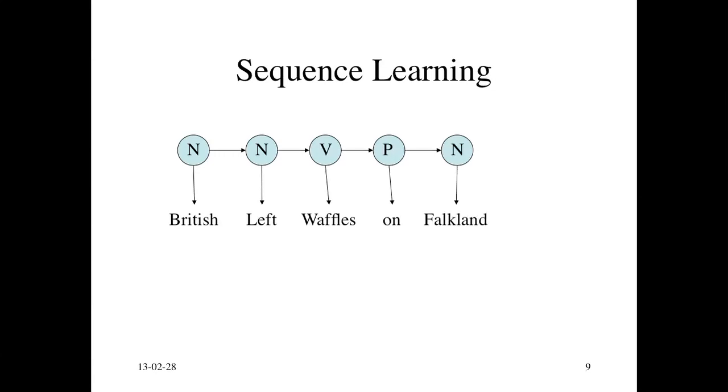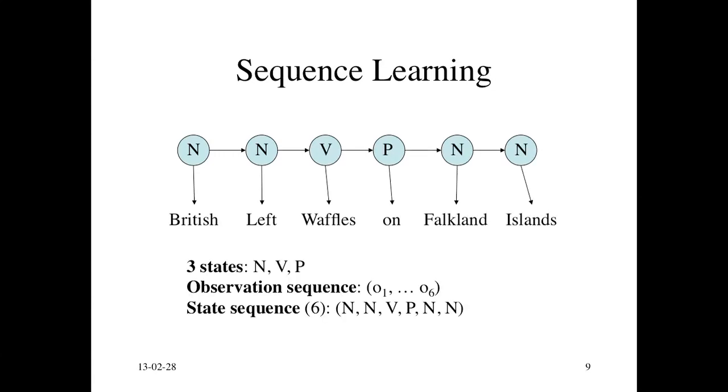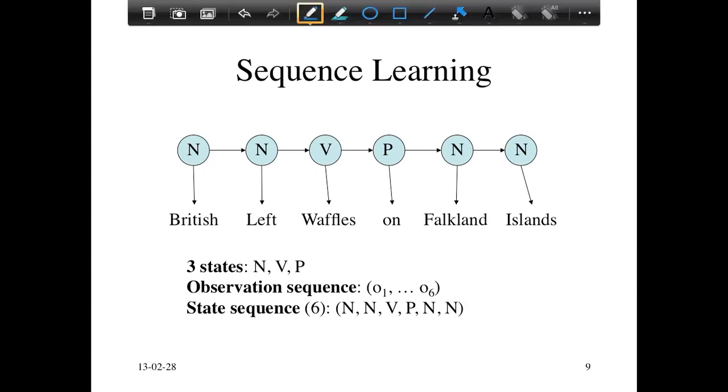Going back to the original example, you can see that this is X1, X2, X6 for the observation sequence, and these are the three states, S1, S2, S3.